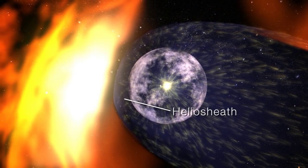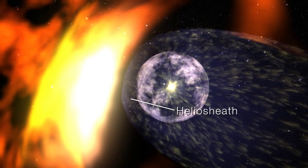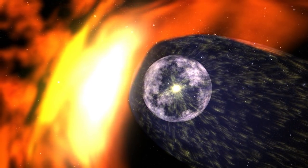Outside this is the heliosheet, where the solar wind slows to a stop, and the magnetic field is bent back by the ionized interstellar wind.